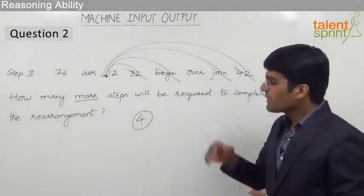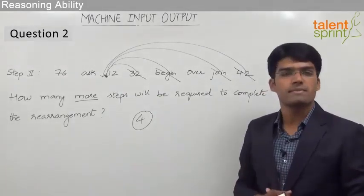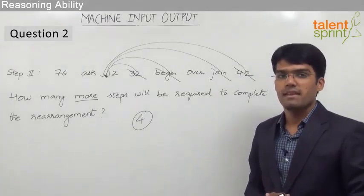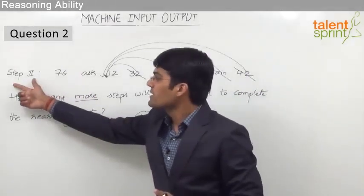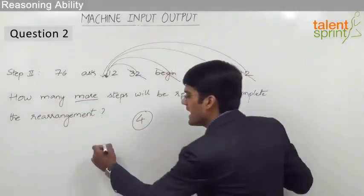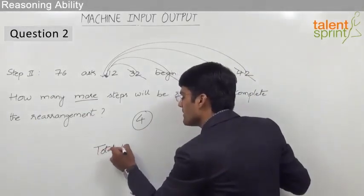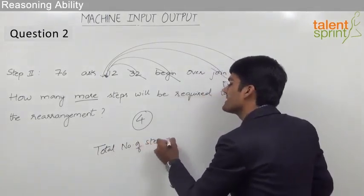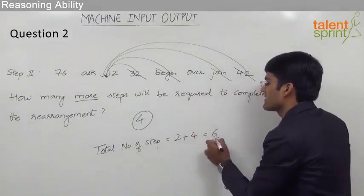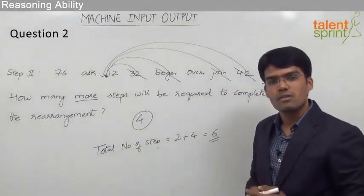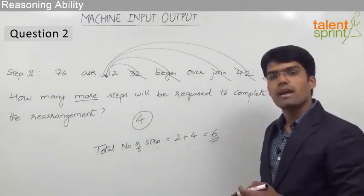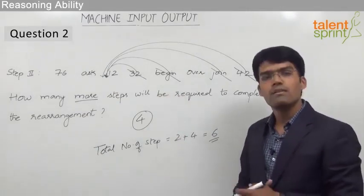In some cases, for the same question, the total number of steps are required. And in such a case, the answer has to be 6. Why? Because already the step 2 is given and we know that 4 more steps are required. So I can say that total number of steps would be equal to the second step plus 4 more steps, that is 6. So if total number of steps are to be determined, the answer has to be 6. If how many more steps are required has to be determined, then the answer has to be 4.